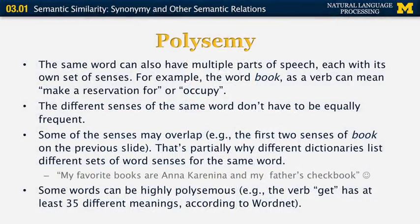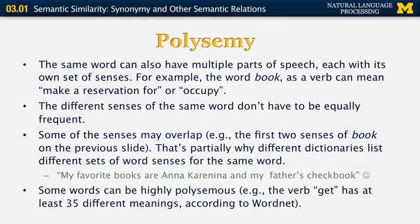Some of the senses of a word may overlap. For example, the first two senses of 'book' — one being a literary work and one being a stack of pages — can overlap. When we say 'bring me the book from the shelf,' we are really talking about the stack of pages, but we could also be thinking about the work of literature. That's why different dictionaries have different sets of word senses for the same word; in some cases they distinguish two senses, while in others they may be conflated.